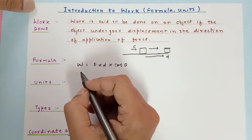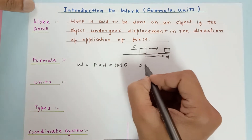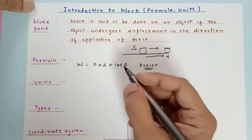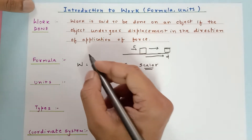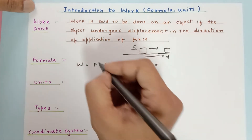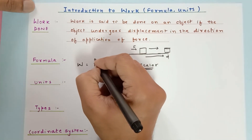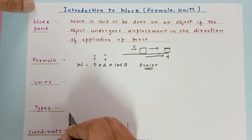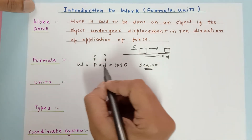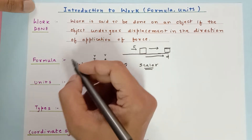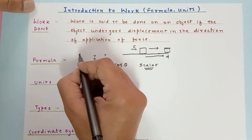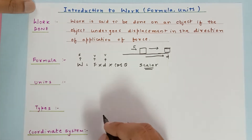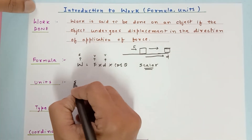Work done is actually a scalar quantity. Work done is a type of energy so it does not have any direction. Force is a vector quantity, displacement is a vector quantity, but the product of these two vector quantities is a scalar quantity. So work done has magnitude but no direction.